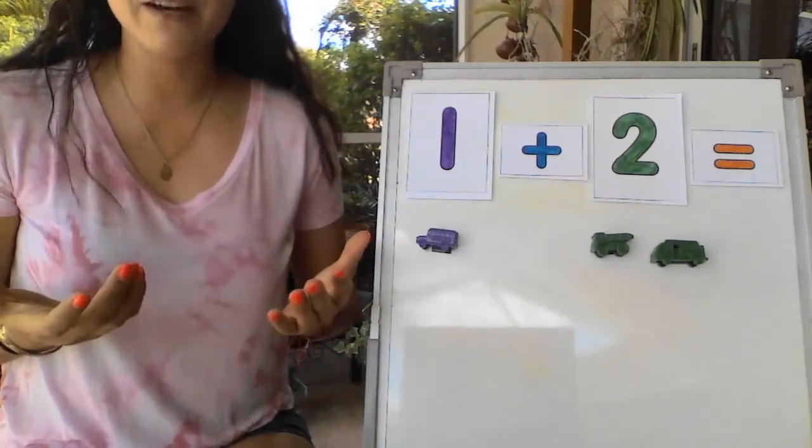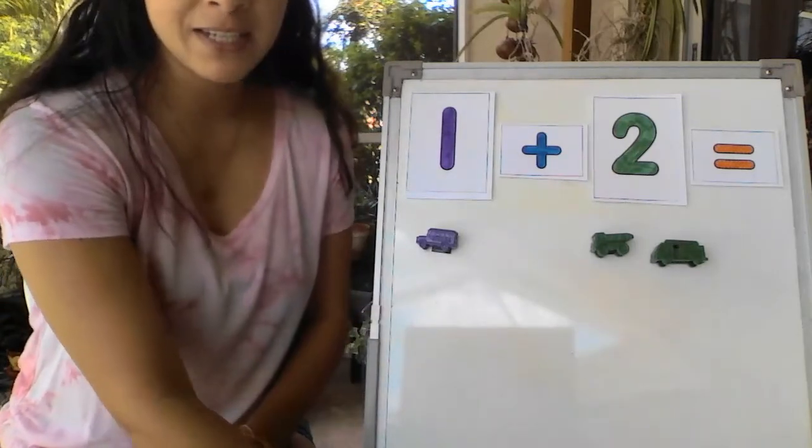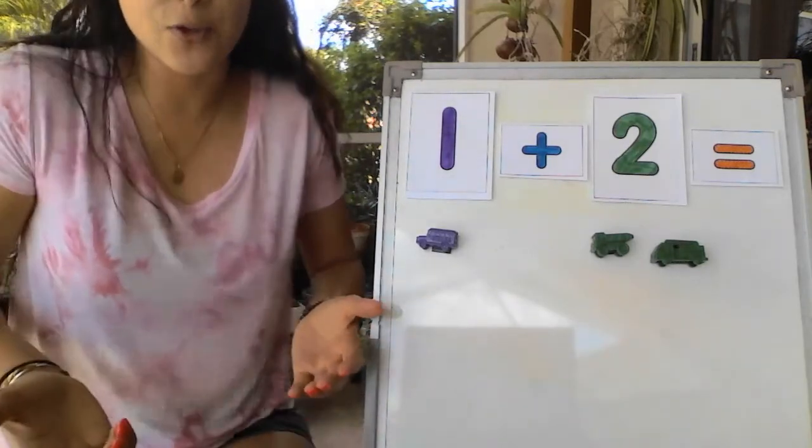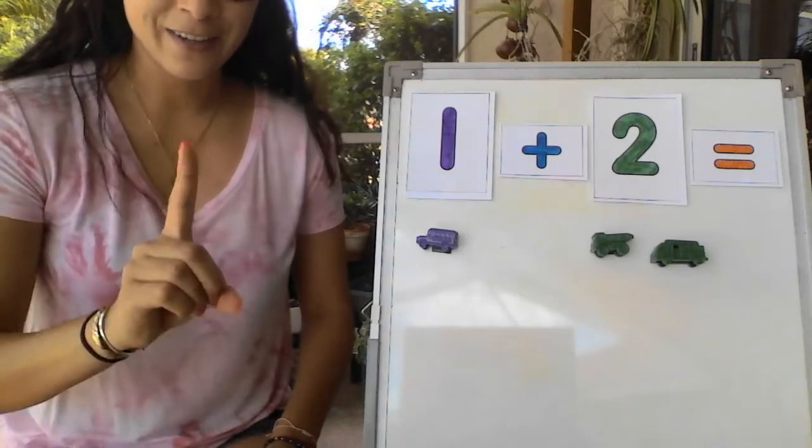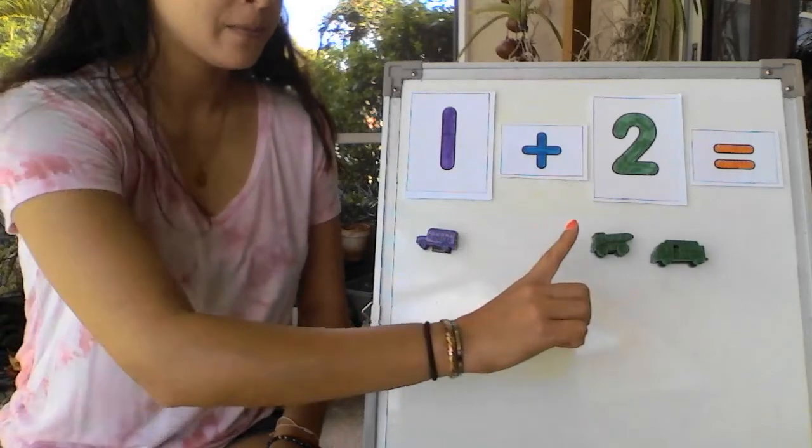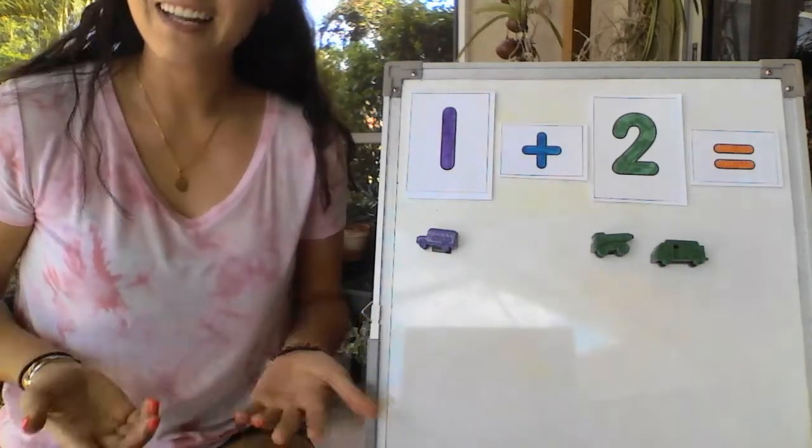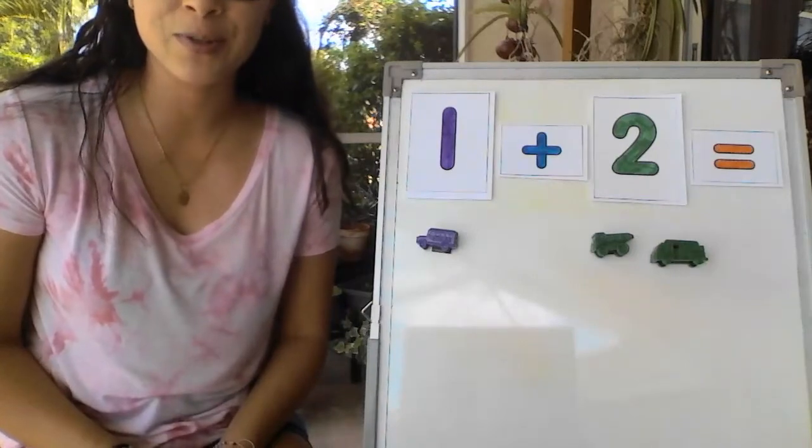So just like we did with our fingers and just like we did with our marker we're going to point and count to see how many vehicles do we have in total. So let's do it together. Let's use our fingers and do it. We have 1, 2, 3. Very good. Now you know the 3 strategies used when we're adding.